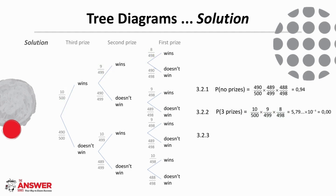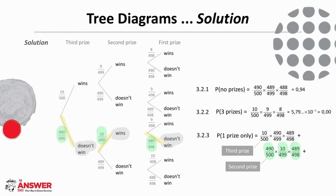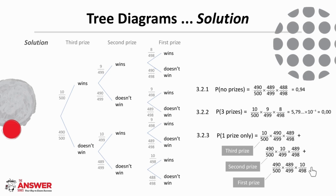For 3.2.3, what is the probability that she wins one prize? There are three pathways to consider for this scenario: winning the third prize, winning the second prize, and winning the first prize. Each time we find the product of the probabilities along each pathway, then we add these products together and we get that the probability of winning one prize only is 0.06, which is also not very likely.